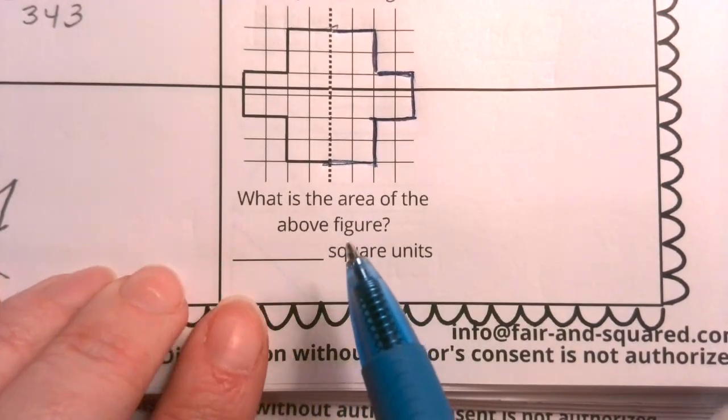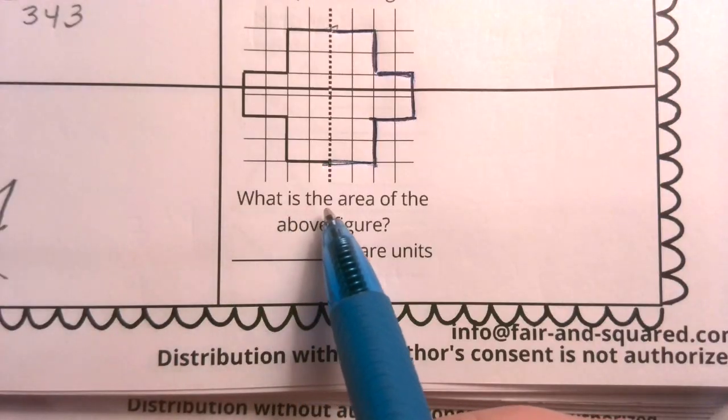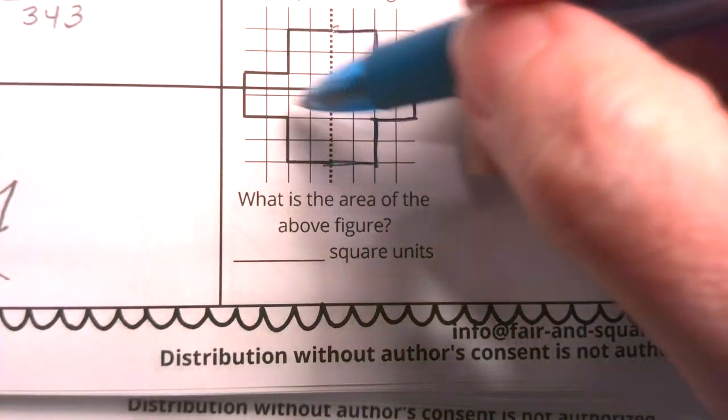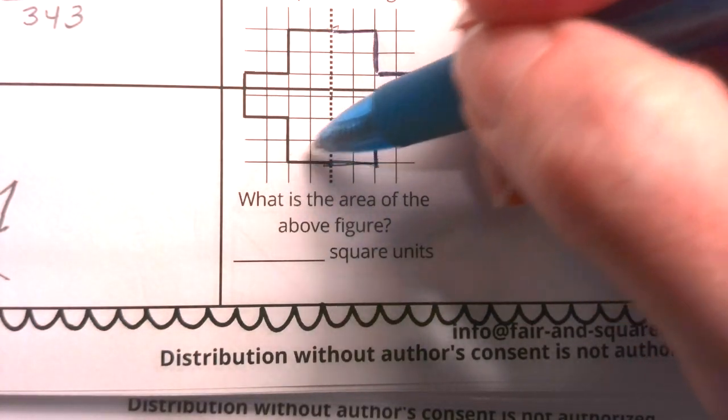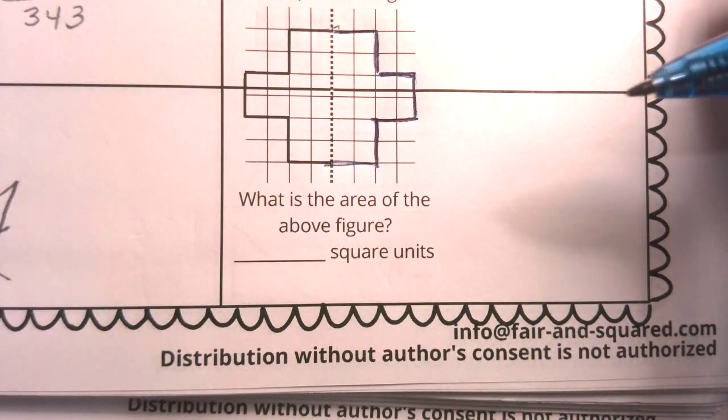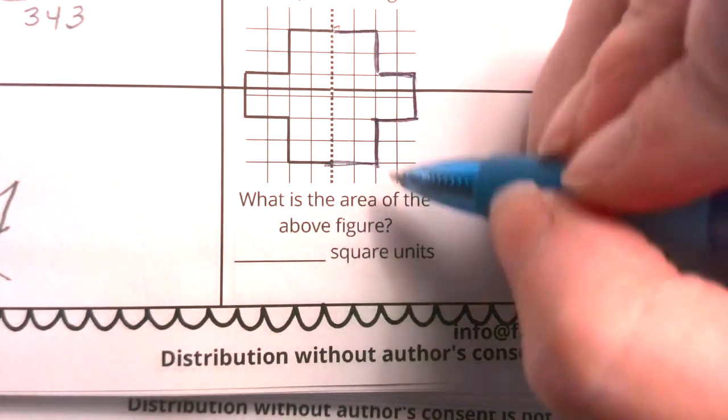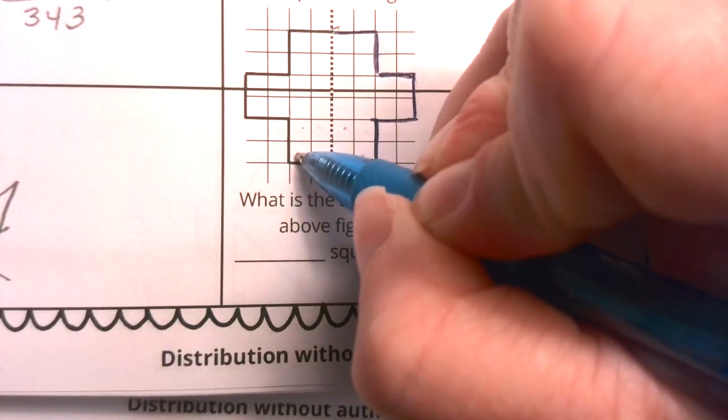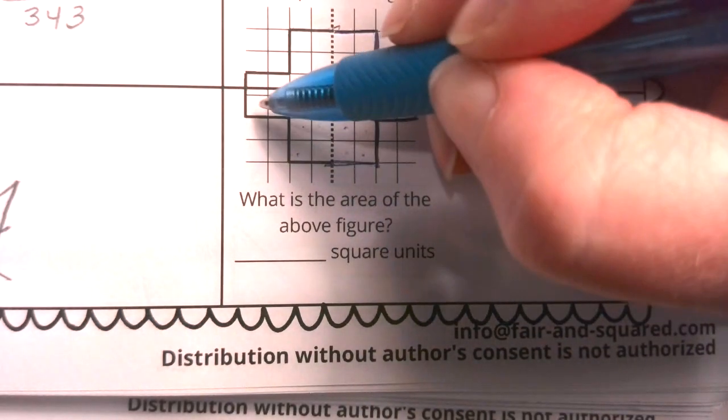And we have one more question. It does say, what is the area of the above figure? How many square units? Area is counting how many squares are inside the shape. So here, we have one, two, three, four, five, six, seven, eight. Let's come up here to this part.